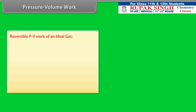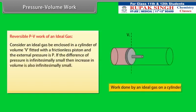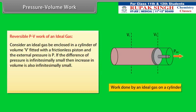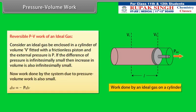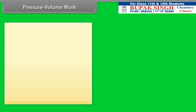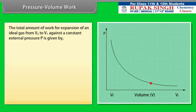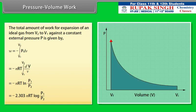Reversible PV work of an ideal gas: consider an ideal gas enclosed in a cylinder of volume V fitted with a frictionless piston under external pressure P. If the difference of pressure is infinitesimally small, the increase in volume is also infinitesimally small. The total work for expansion of an ideal gas from V1 to V2 against a constant external pressure P is given by minus 2.303 nRT log(P1/P2).